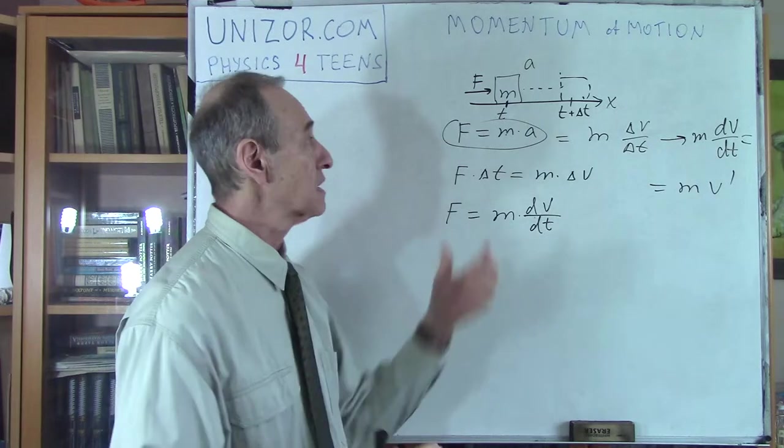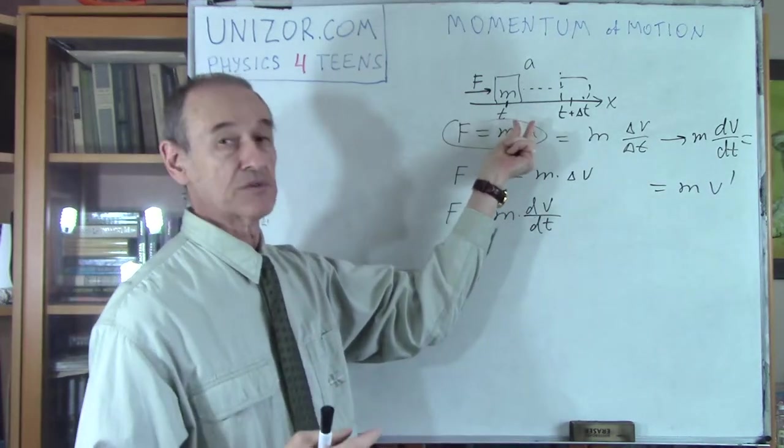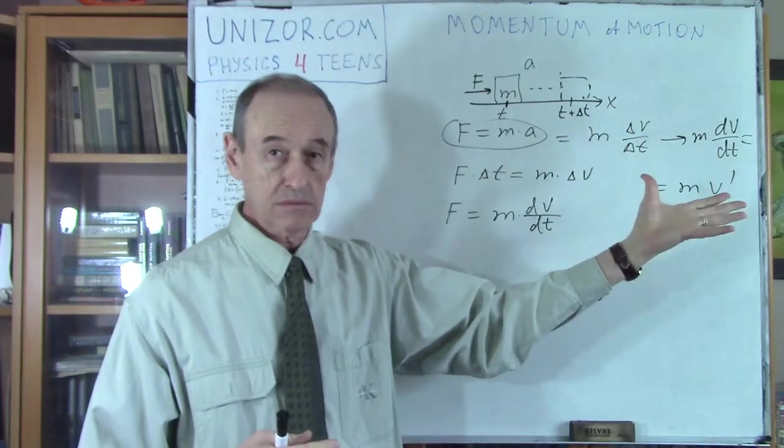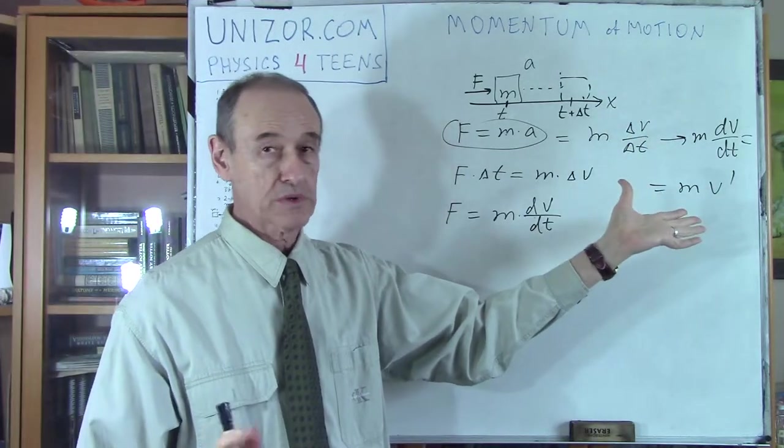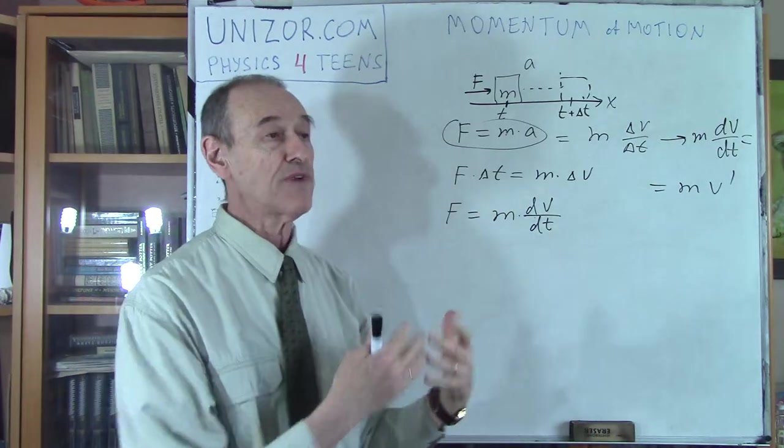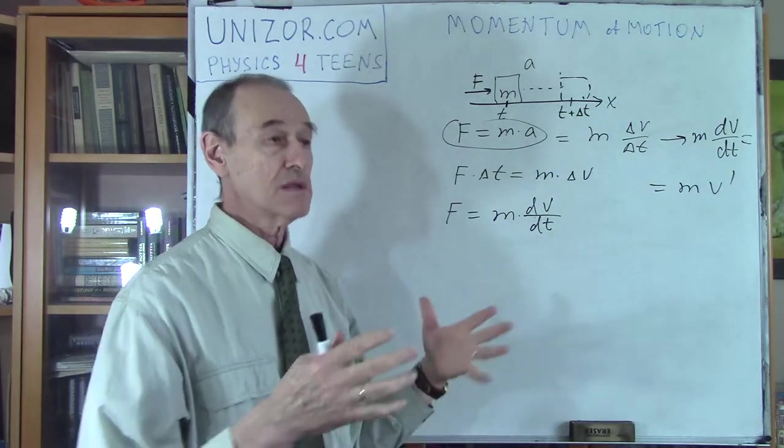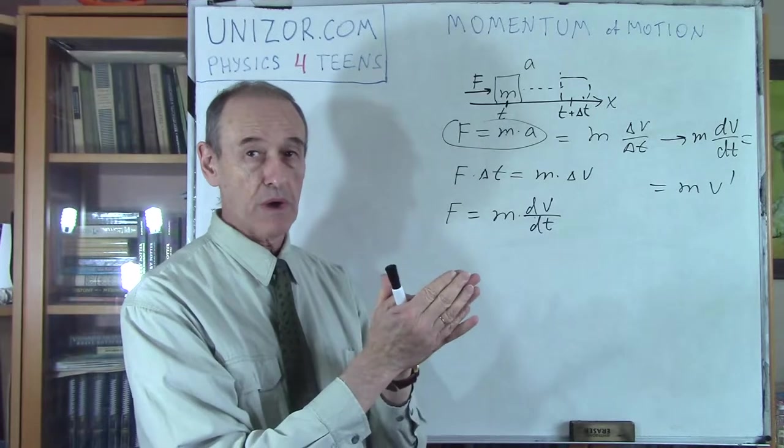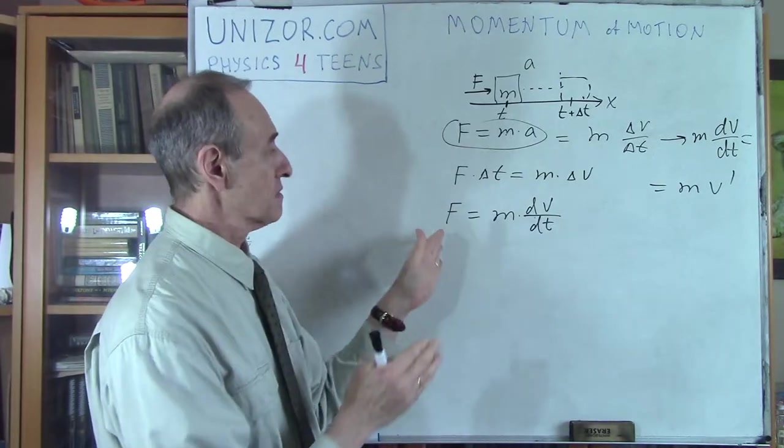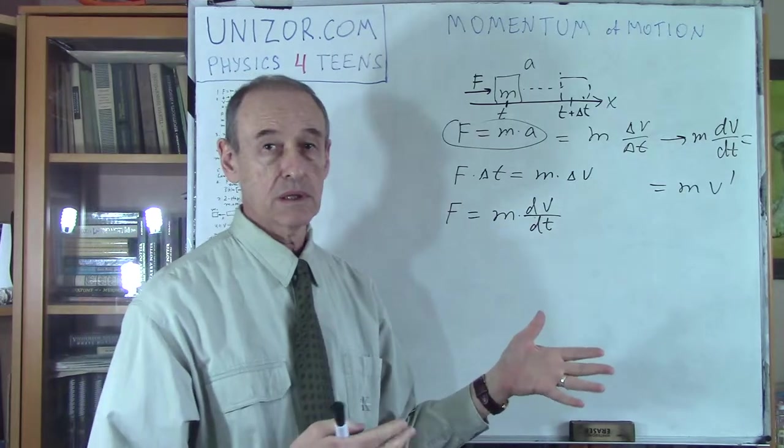What we can say is that force equals M times derivative dV by dt. What's interesting about this equation, since delta t can be infinitesimally small, we don't really have to depend on constant force and constant acceleration. Because all we need is constant value within this delta t. Within the next delta t, it can be different.